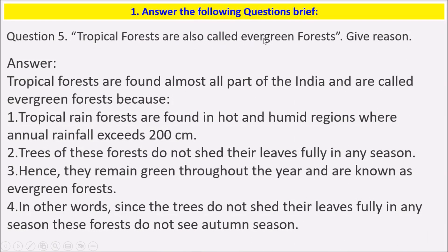Fifth question: tropical forests are also called evergreen forests — give reason. Tropical forests are found in almost all parts of India and are called evergreen forests because they are found in hot and humid regions where annual rainfall exceeds 200 centimeters. Trees of this forest do not shed their leaves fully in any season; hence they remain green throughout the year. Since the trees do not shed their leaves fully in any season, these forests do not see an autumn season.